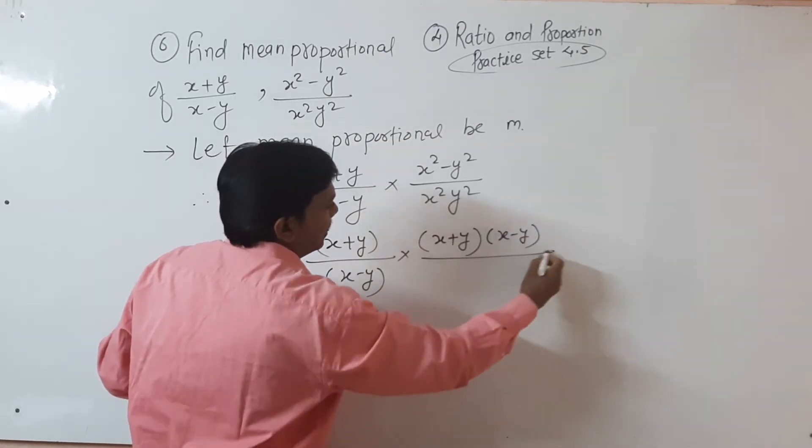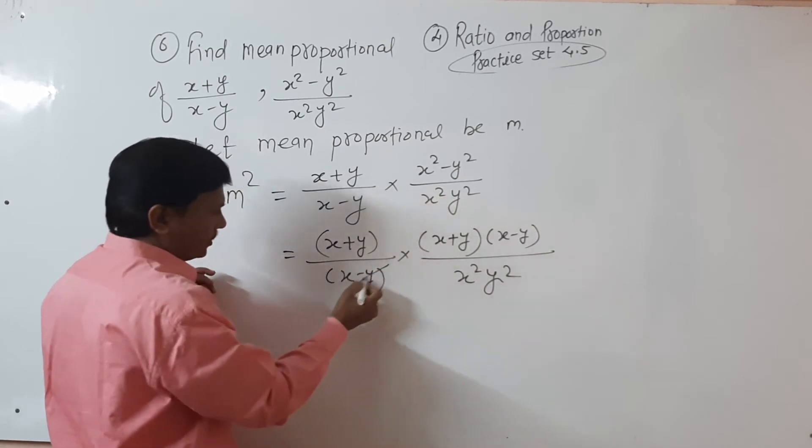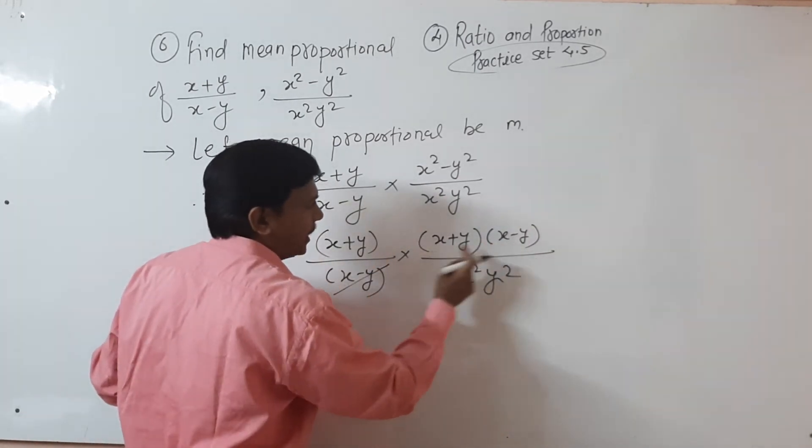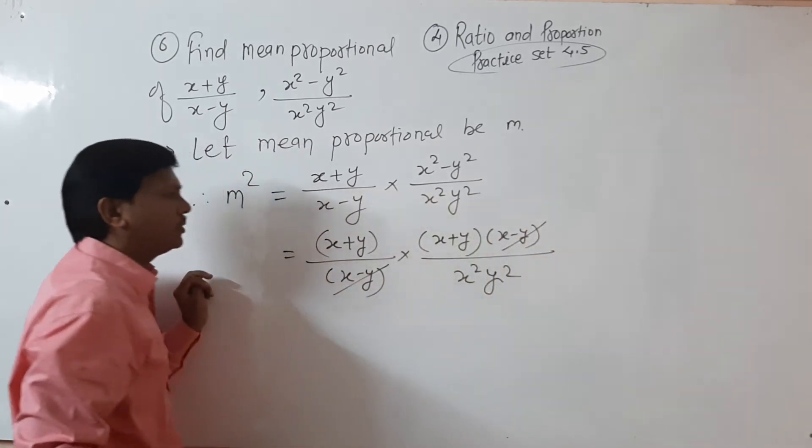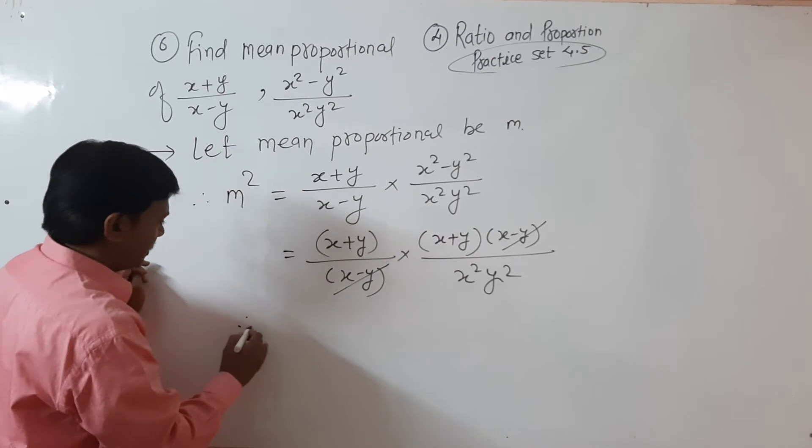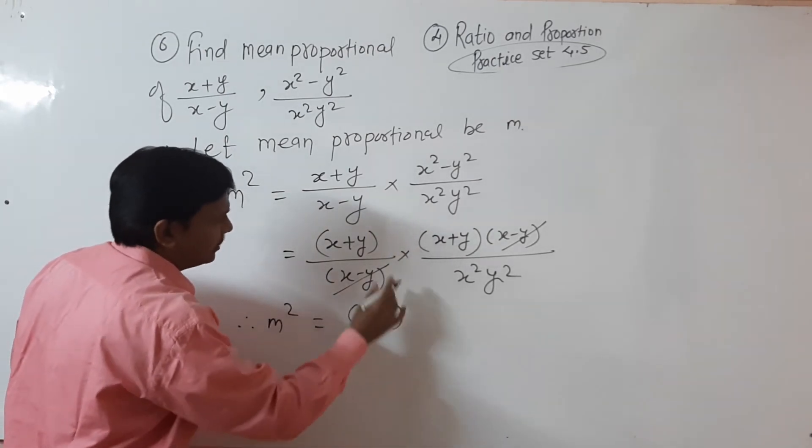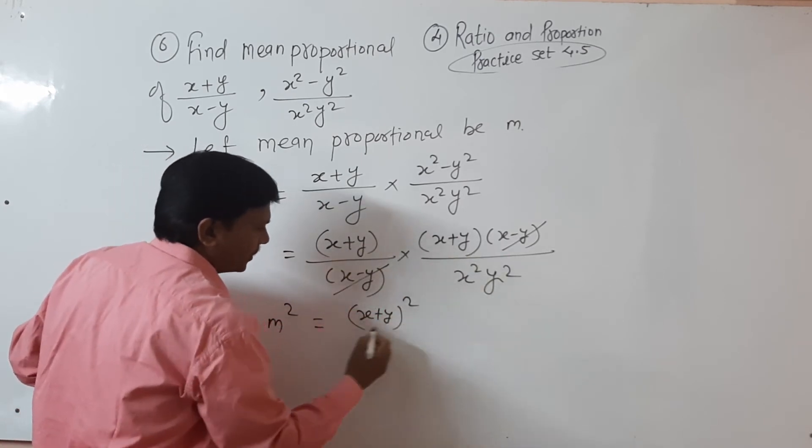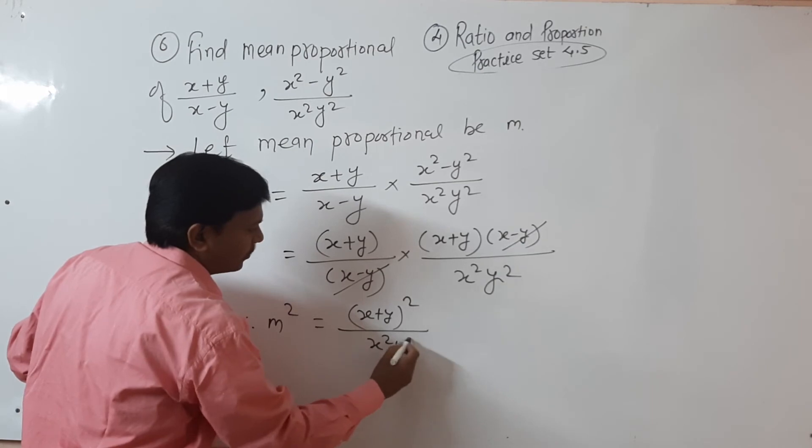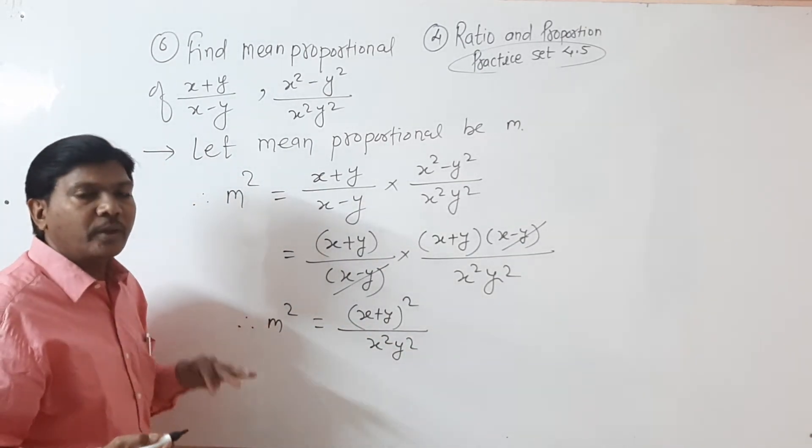So this x-y and here multiply, so x-y cancels out. Now nothing else cancels, so you get the value: m² = (x+y)² / (x²y²). So here it is m².